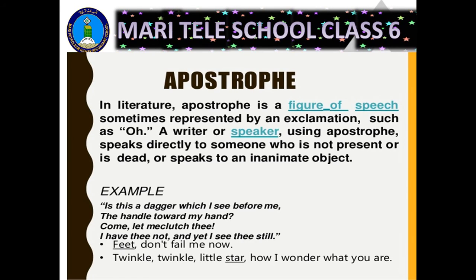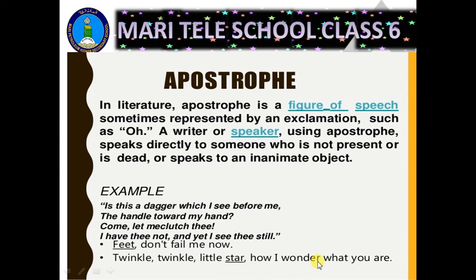Apostrophe, in literature, is a figure of speech — sometimes represented by an exclamation such as 'O' — where a writer or speaker speaks directly to someone who is not present, is dead, or speaks to an inanimate object. Examples include: 'Is this a dagger which I see before me? The handle toward my hand — come, let me clutch thee. I have thee not and yet I see thee still.' Also, 'Feet, don't fail me now' and 'Twinkle, twinkle, little star, how I wonder what you are'.